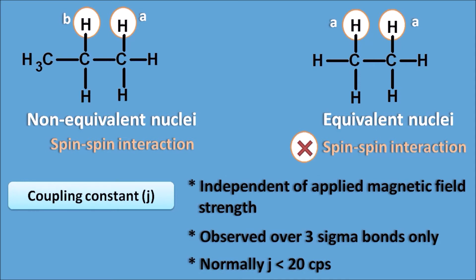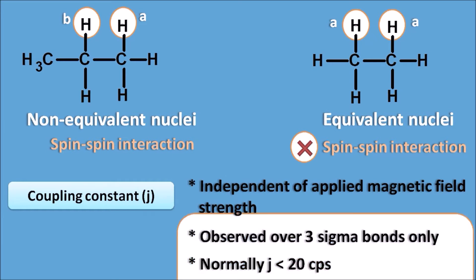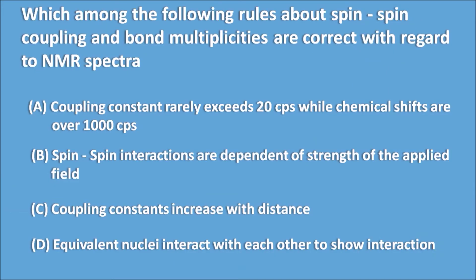Normally, J values are less than 20 cycles per second (Hz), so J values are very small compared with the chemical shift, falling below 20 cycles per second. Therefore, option B — that spin-spin interaction depends on the strength of the applied magnetic field — is wrong. Option C — that coupling constants increase with distance — is also wrong, since coupling constants only work over three sigma bonds. Option D — that equivalent nuclei interact with each other to show interaction — is false, as only non-equivalent nuclei show spin-spin interaction.